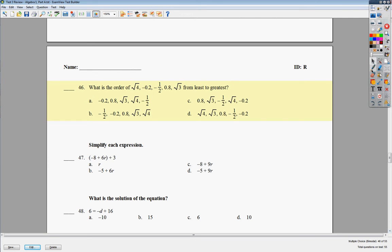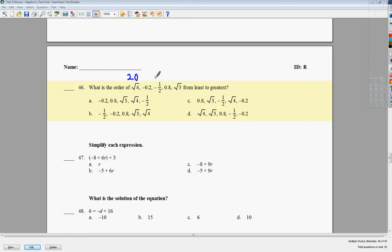46, same type of thing as before. We need to convert these all into decimals so we can make a comparison. Square root of 4, I know, is 2.0. This one's already 1. This is negative 0.5. 0.8 is already in form that I needed in, and 1.7 is square root of 3. Now I'm doing least to greatest here. If I'm doing least, that means I need to look at the smallest numbers first, smallest value of numbers. So I'm going to look at the negatives. And remember that the thing that is the most negative is the one that I need to put first.